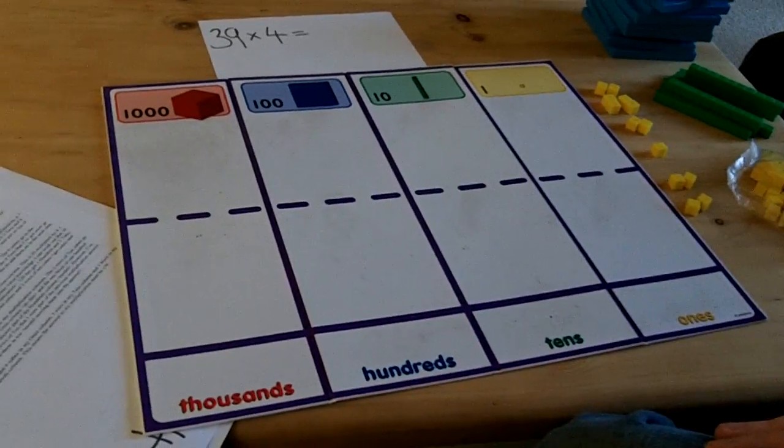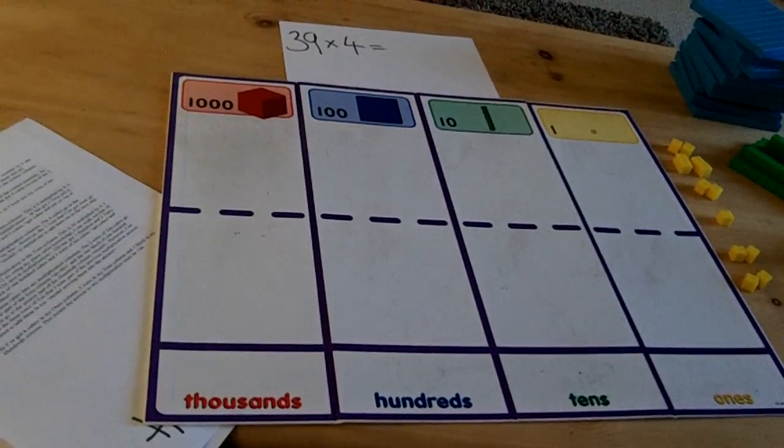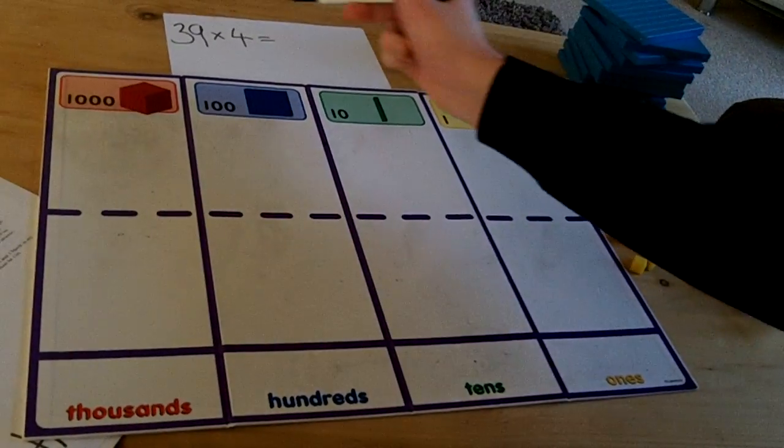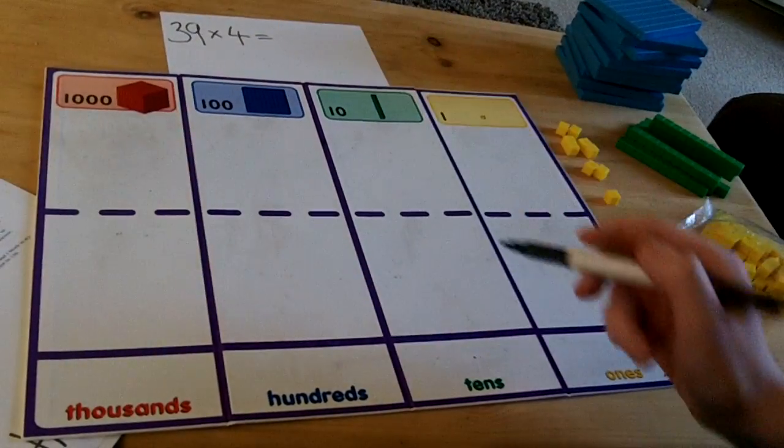This video will show you how to use Dean's Cubes to multiply a 2 digit number by a 1 digit number. The multiplication I am going to solve is 39 multiplied by 4.